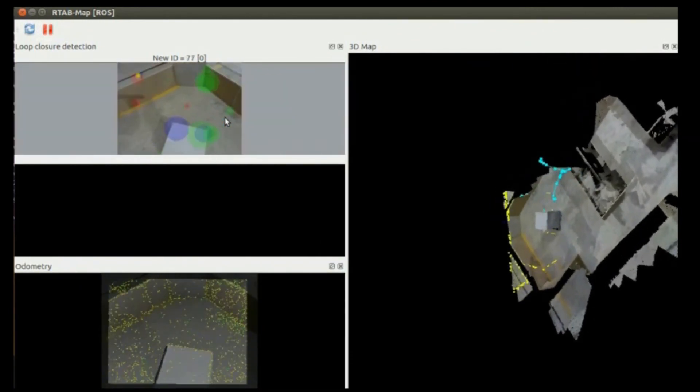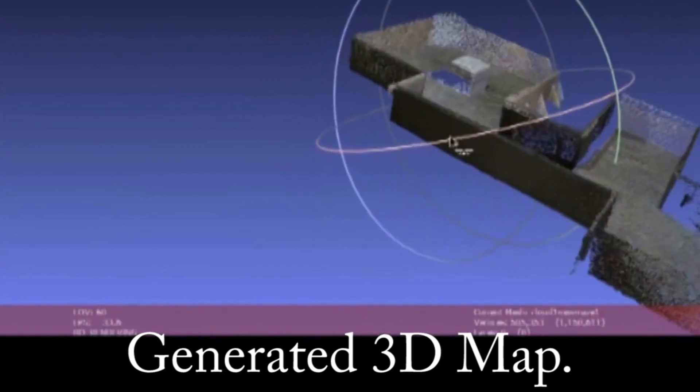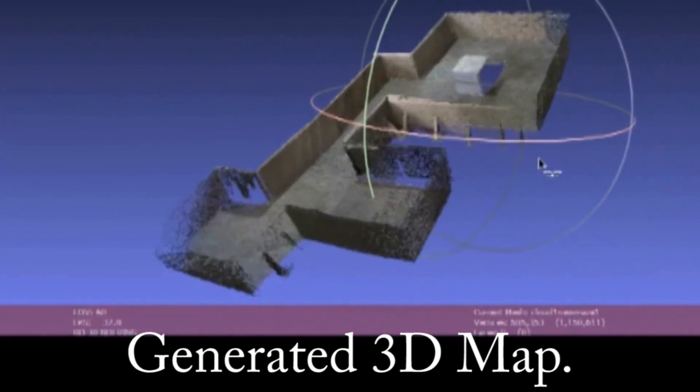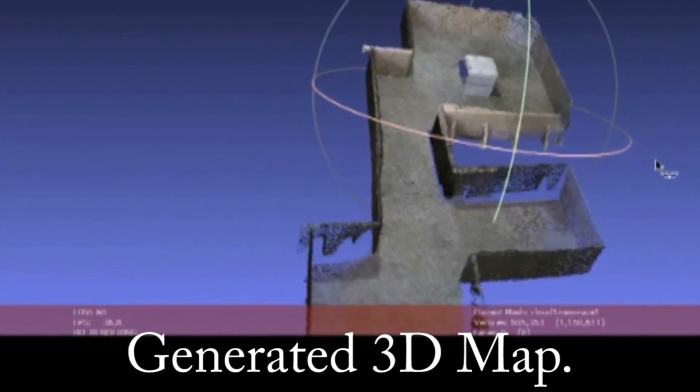Laser ranging based localization - no GPS or magnetometers used. This can be used in deep caves, underground mines, other planets, etc.